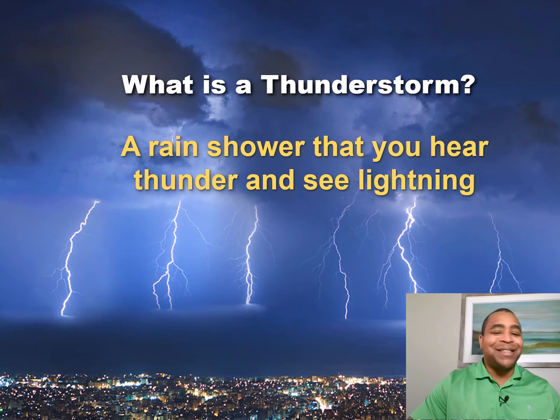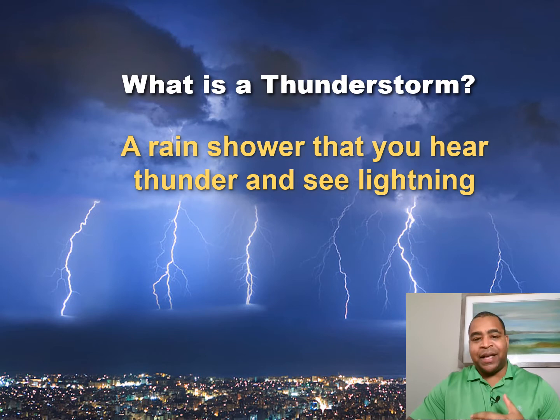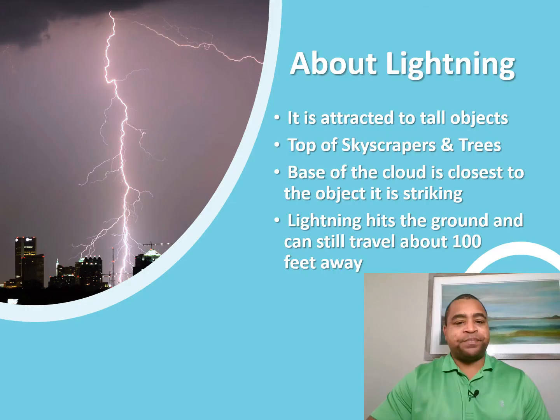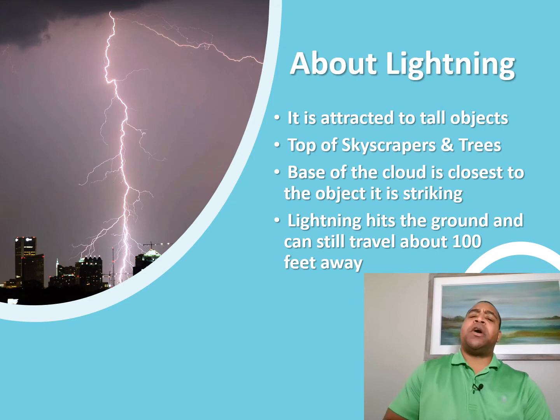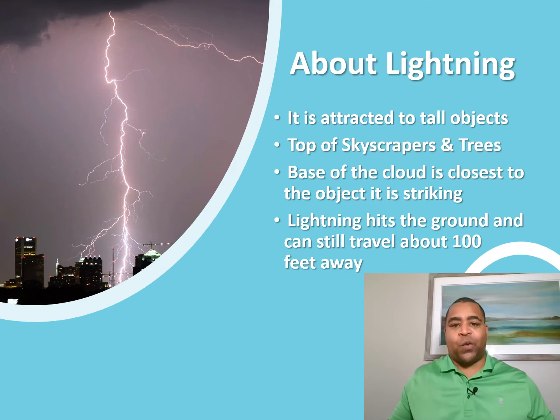So what is a thunderstorm? It essentially is a rain shower where you hear thunder and then you see lightning. Not all rain showers are thunderstorms, but for the most part, thunderstorms are accompanied by rain, but not always. So let's talk a little bit about one of the most distinct features of a thunderstorm, which includes, of course, the lightning.